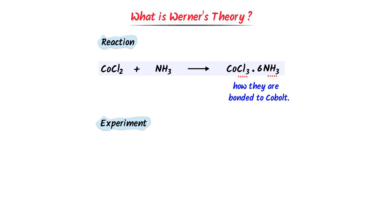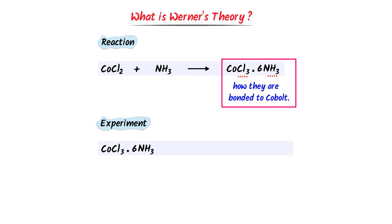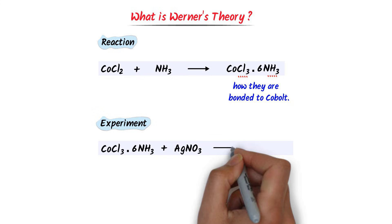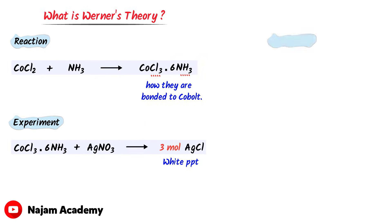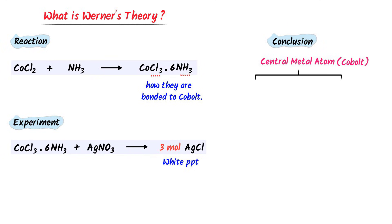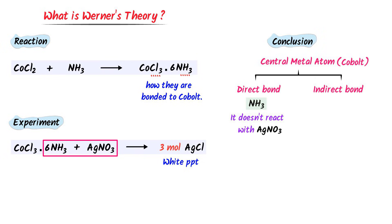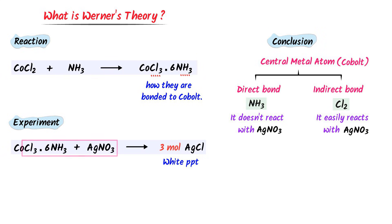He took this coordination compound and reacted it with silver nitrate. As a result, he got 3 moles of silver chloride in the form of white precipitate. From this reaction, he concluded that coordination compounds form two types of bonds: direct bond and indirect bond. For example, ammonia forms a direct bond with cobalt, that's why it didn't react with silver nitrate. So he took the coordination compound and rearranged it. We know that NH₃ is directly bonded to cobalt.